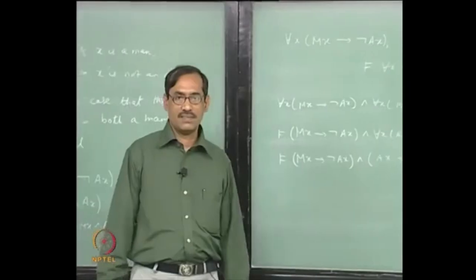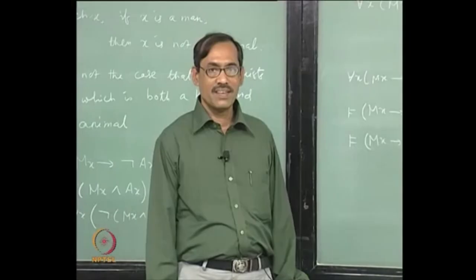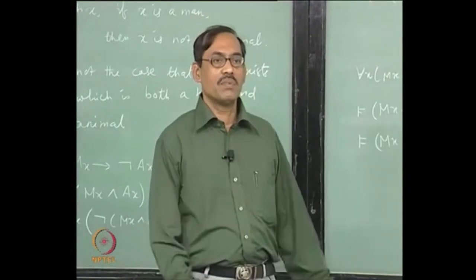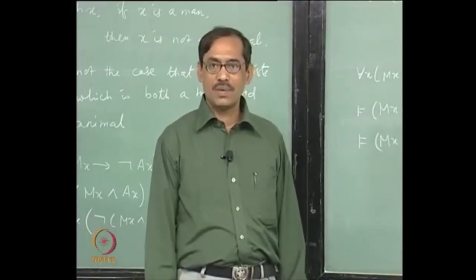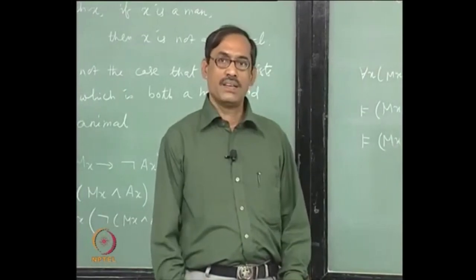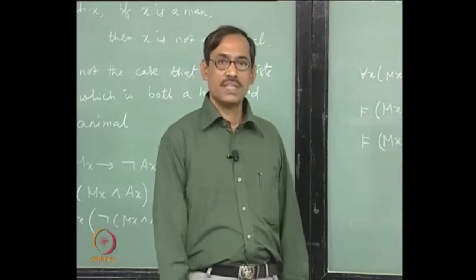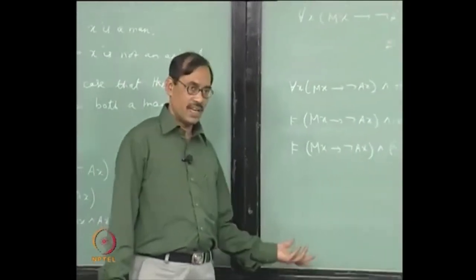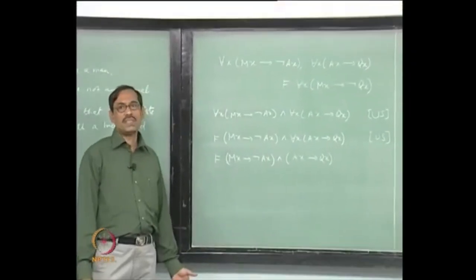I am stuck. I can try to proceed, but it looks like it need not be valid. I am not able to prove it — that is why I think it can be invalid. That is not a proof, however. To prove invalidity, what you will do? Find one state which does not satisfy it. That means you have to get a state which is a model of both the premises but is not a model of the conclusion.